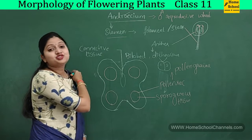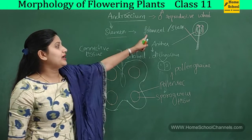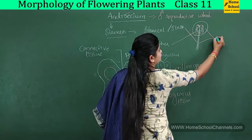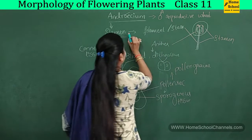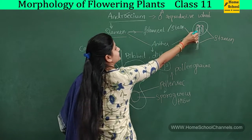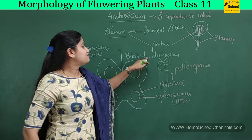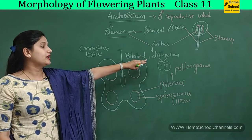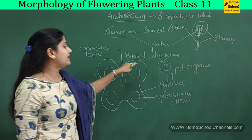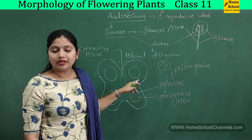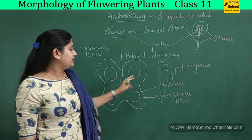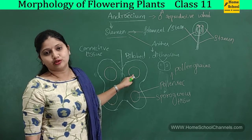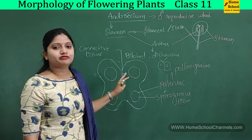To summarize the structure of the stamen: together the filament and anther are called a stamen. The stamen has two parts — the filament and the anther. The anther is bilobed and dithecous — dithecous because there are two thecae, and bilobed because there are two chambers in every lobe. Every chamber has a pollen sac, and inside the pollen sac the pollen grains are produced.